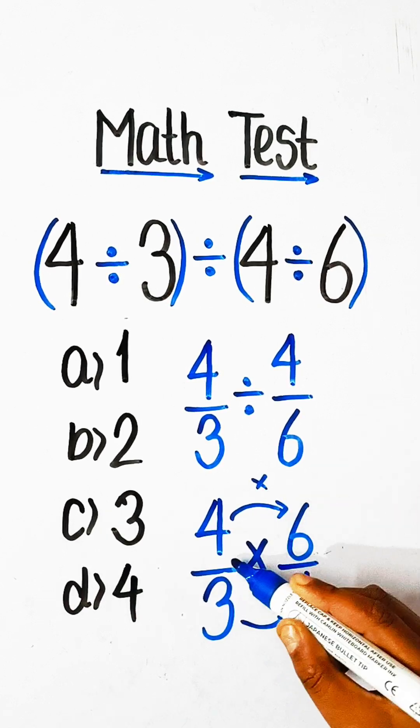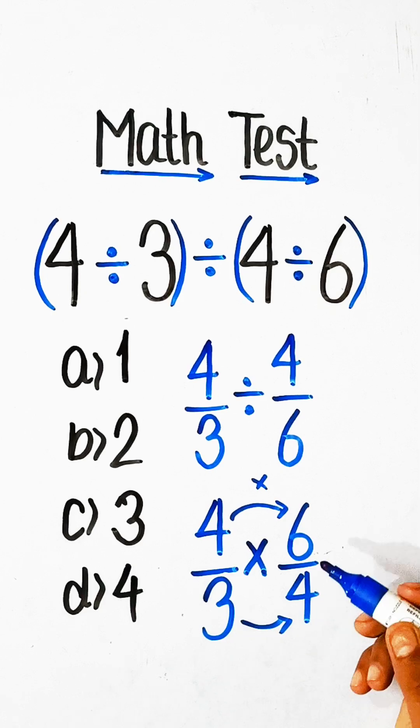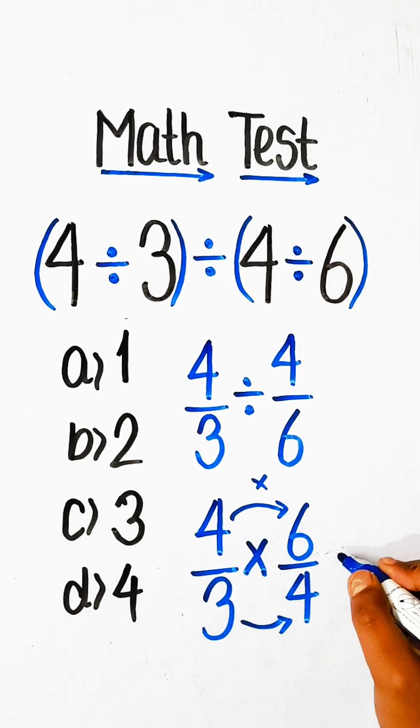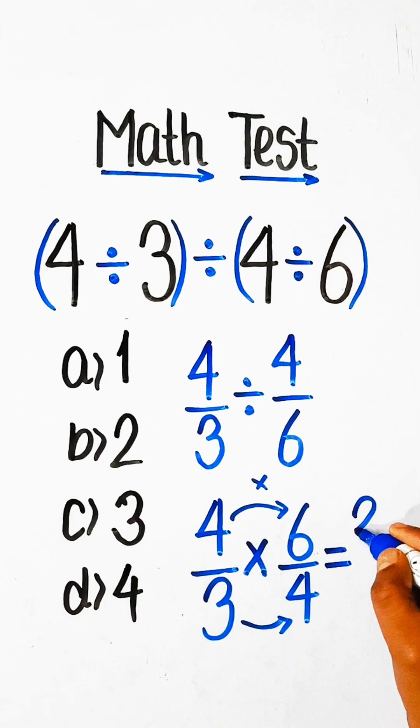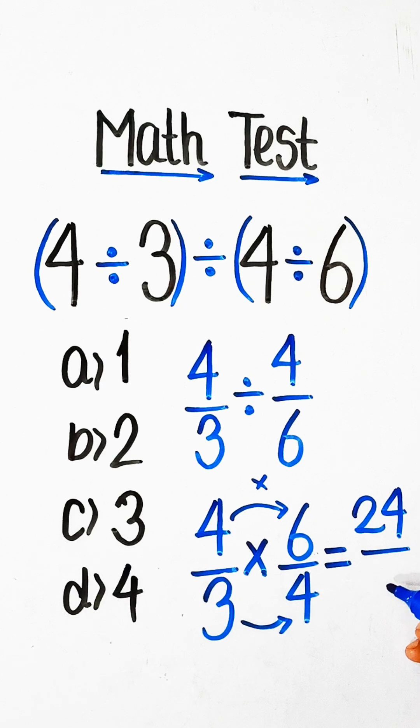We have to multiply numerator by numerator and denominator by denominator. So 4 times 6 are 24 and 3 times 4 are 12.